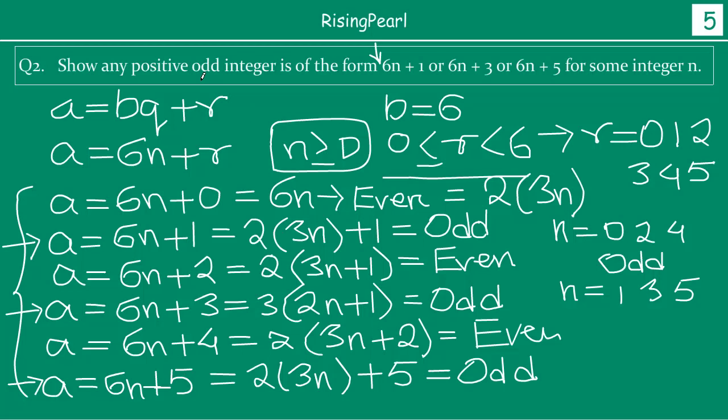So we see that of all the different representations, the three that give us always positive odd integers are 6n plus 1, 6n plus 3, and 6n plus 5. This confirms: show any positive odd integer is of the form 6n plus 1, 6n plus 3, or 6n plus 5. Friends, I am not writing the full exam solution here — I want you to do it yourself based on the example 1 I showed you. In the next video, I am going to talk about question 3: squares of numbers and how we can use Euclid's division lemma to show those number properties. Thanks for watching.